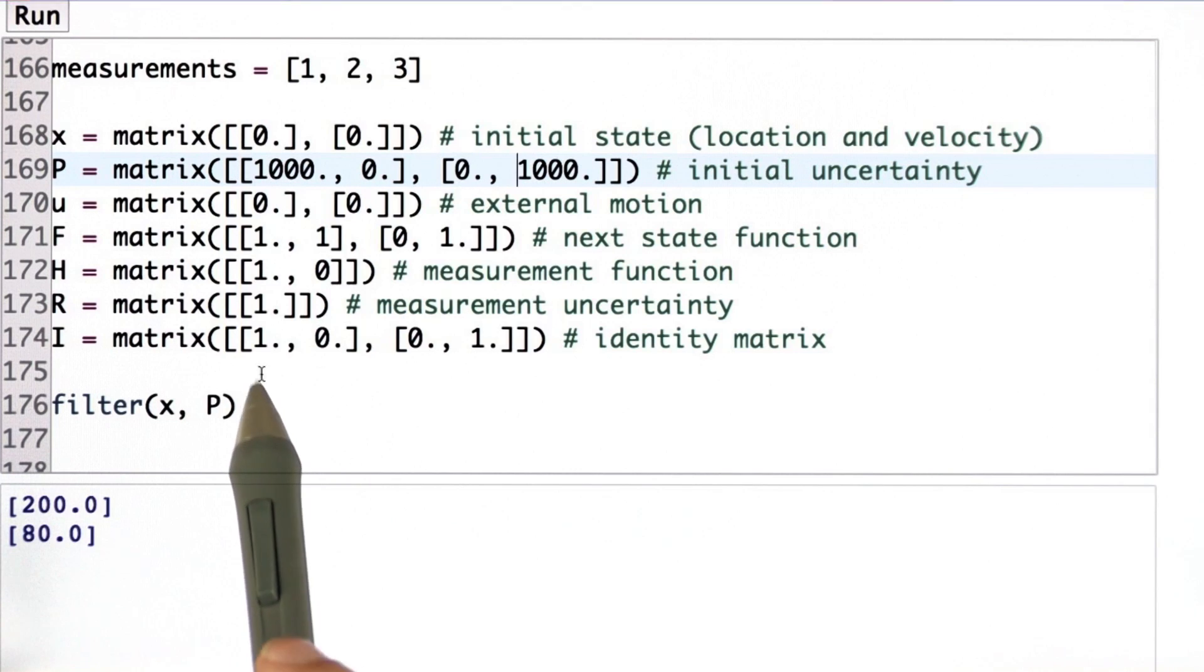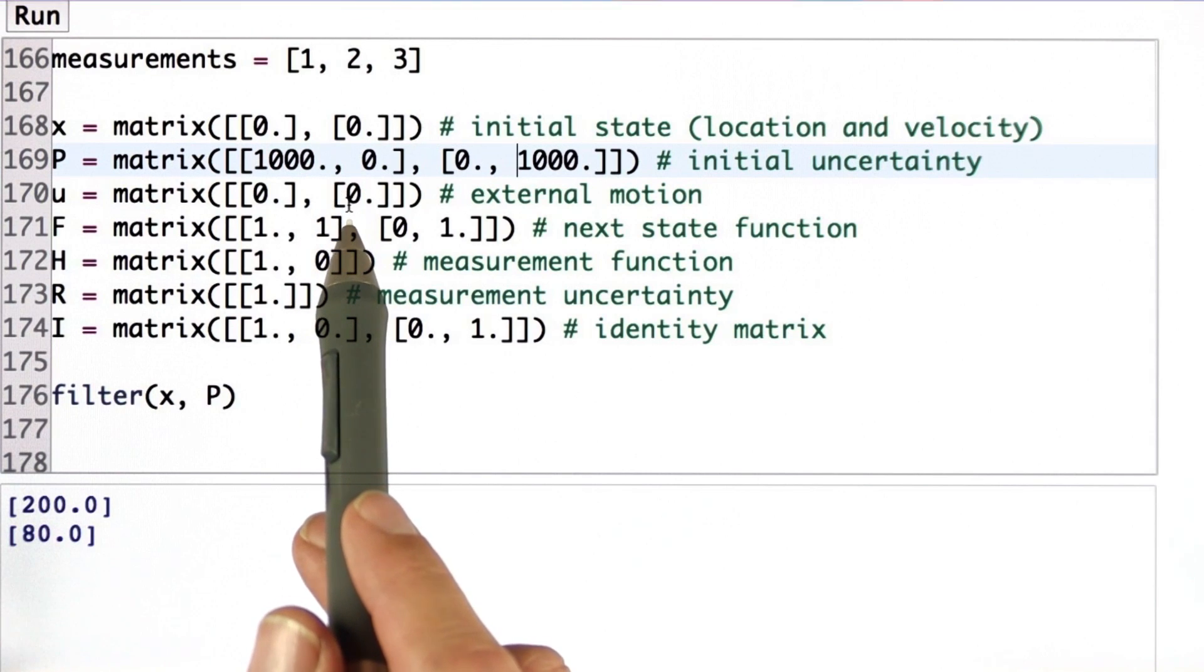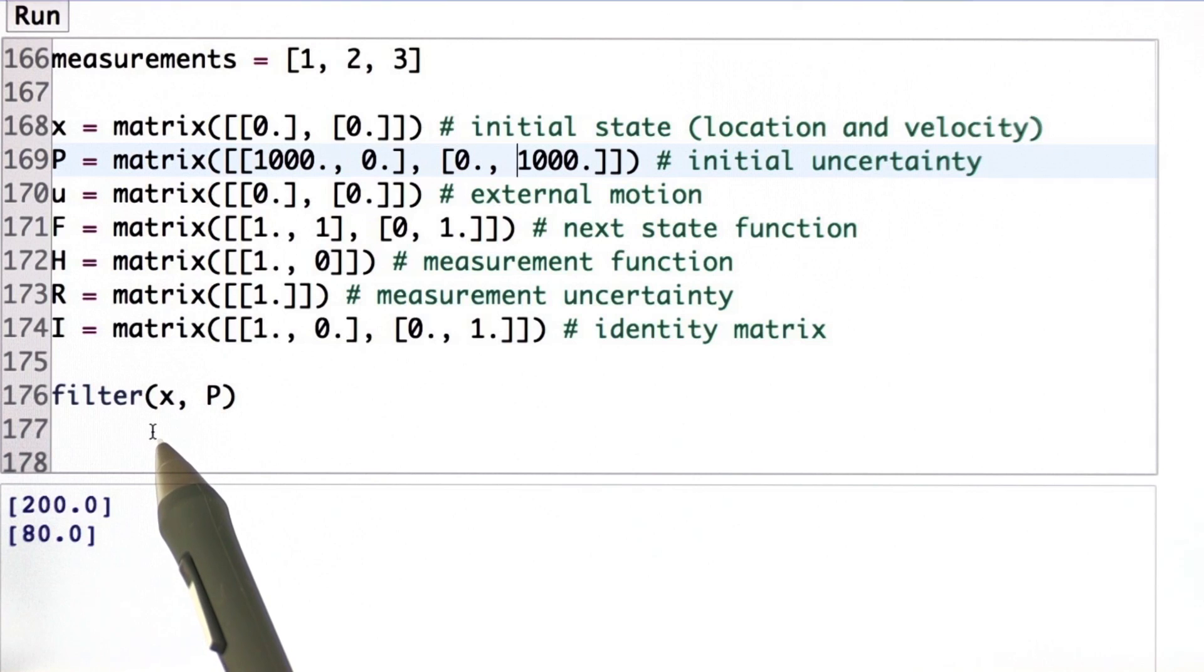In the filter that I want you to program, I want the measurement update first, and then the motion update. So every time we run the filter, I want you to update the measurement first, then the motion.